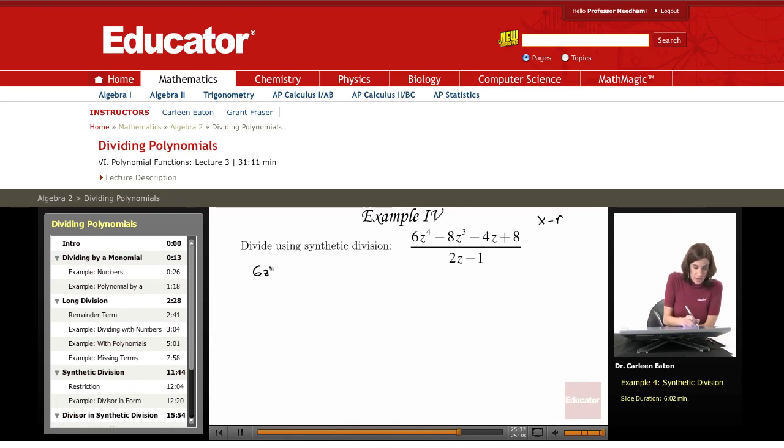First addressing the missing term. I'm missing a z squared term, so I have 6z to the fourth minus 8z to the third. Since I have no z squared term, I'm going to use the coefficient of zero for that. Zero z squared minus 4z plus 8. Okay, that's taken care of.